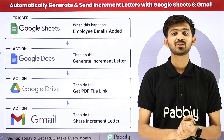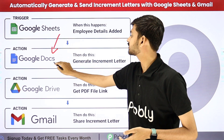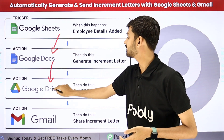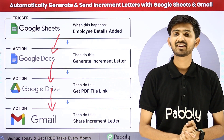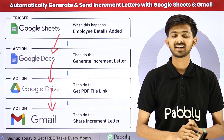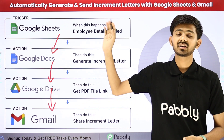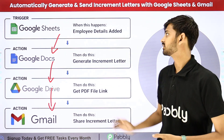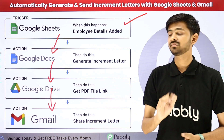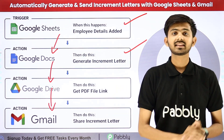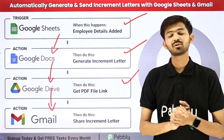To do this, I have to create a connection between Google Sheets, Google Docs, Google Drive, and Gmail. For building this connection, I'm going to use Pabbly Connect, which is an amazing software for automation and integration. In Pabbly Connect, I have to use trigger and actions. In the trigger application I'm going to use Google Sheets, in action I'll first use Google Docs, then Google Drive, and finally Gmail.